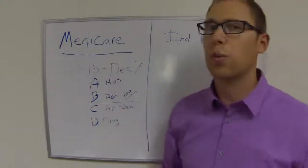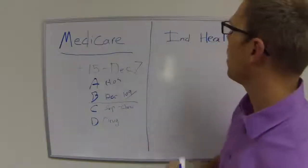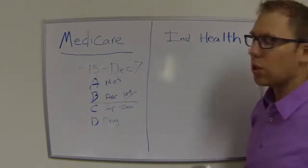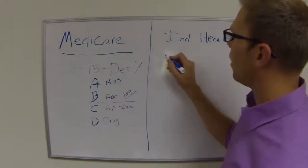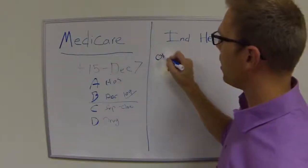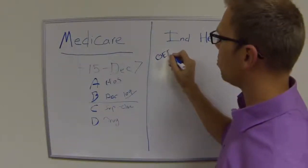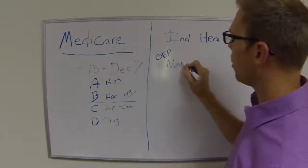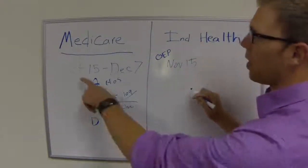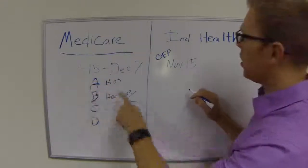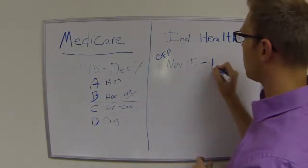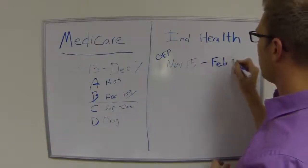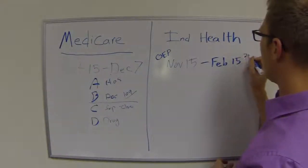That's what we'll be going over from October 15th to December 7th. And then we have Individual Health Care. Individual Health Care — they call it the OEP, the Open Enrollment Period — and that's going to start November 15th. So not like Medicare's October 15th; it's November 15th, and it's going to go to February 15th.